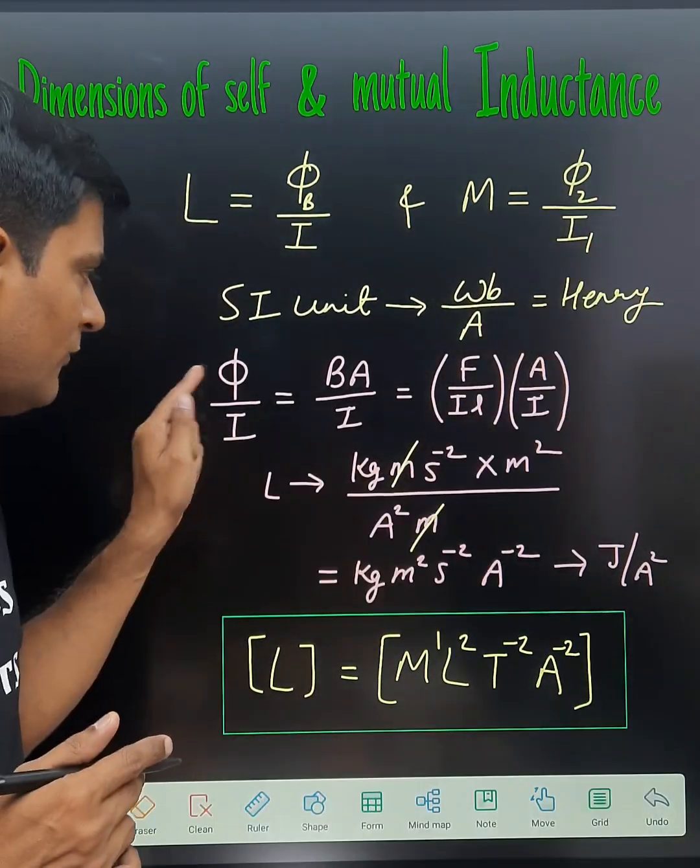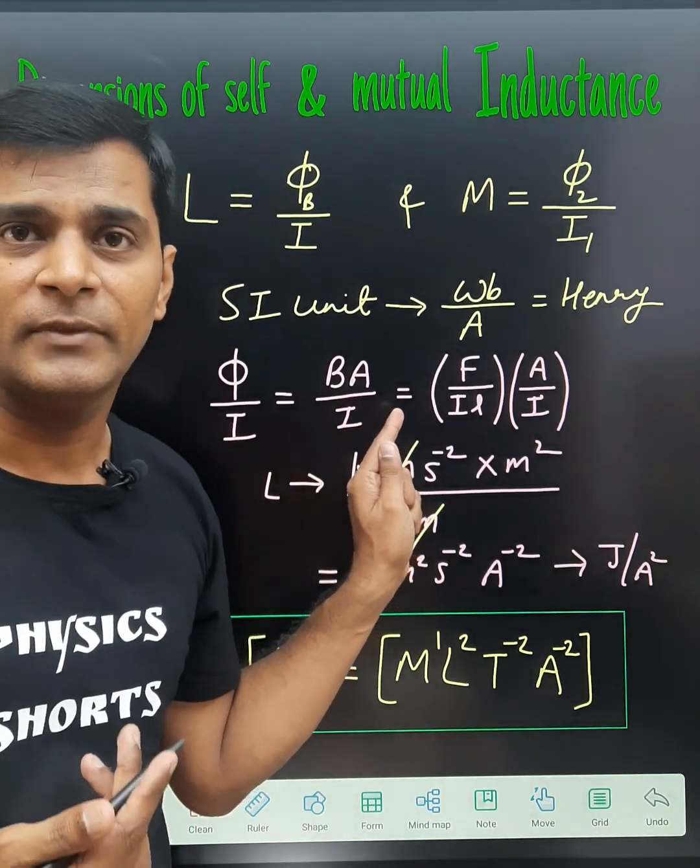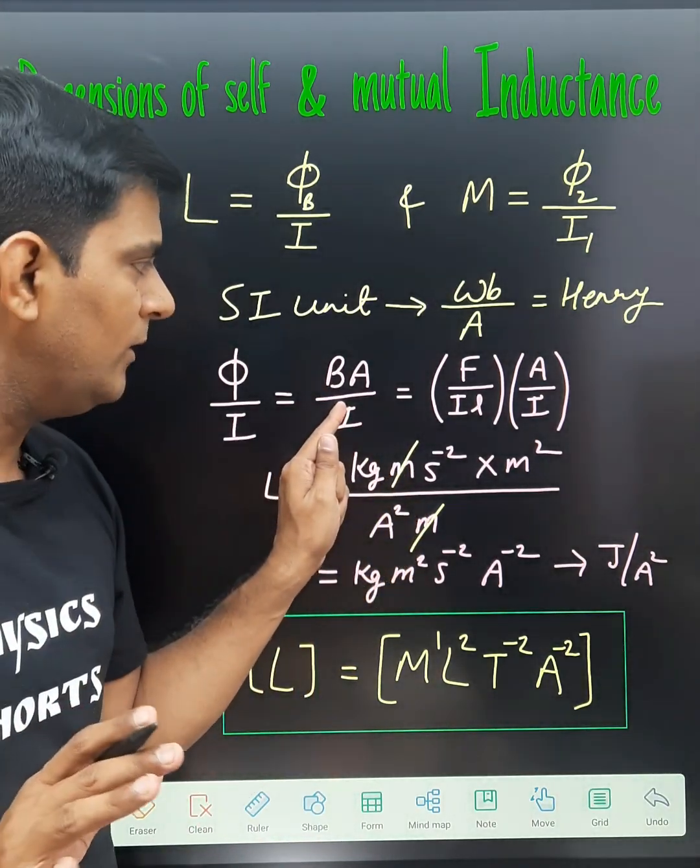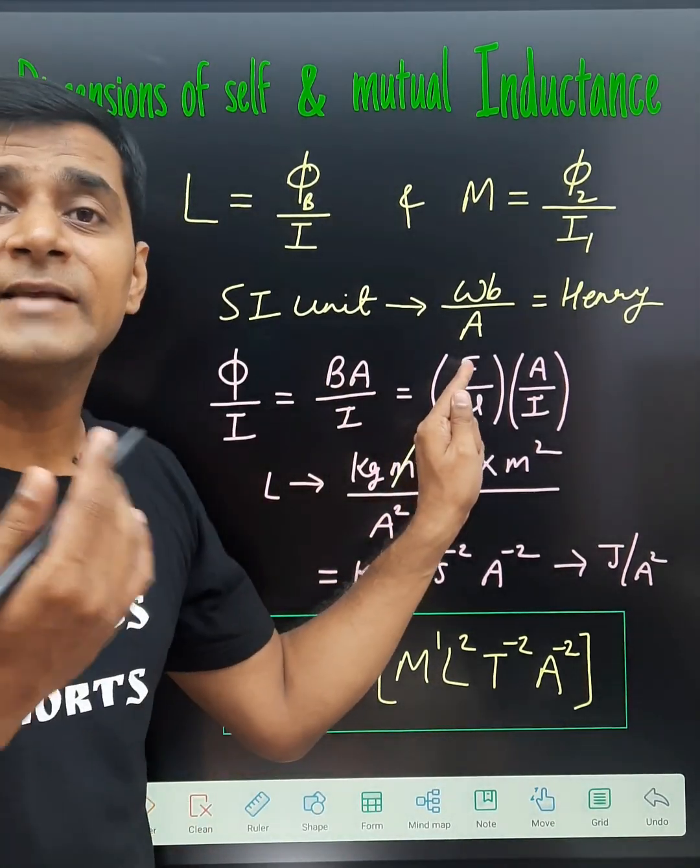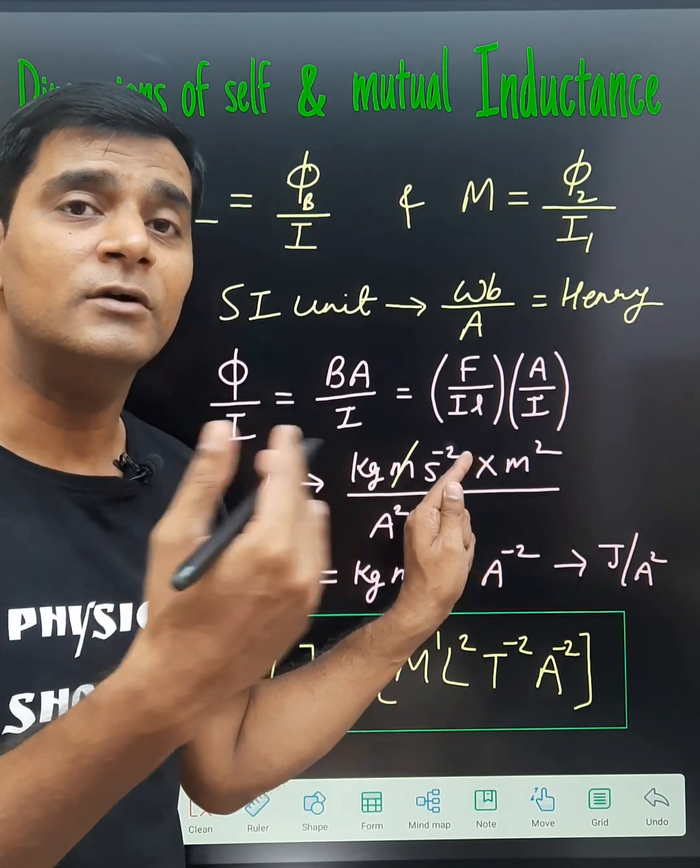φB is the magnetic flux, which is B·A (cos θ is not having the unit, so we are taking only B·A). Similarly, B is F/(IL) from the force acting on a current-carrying conductor F = BIL sin θ. We are taking this B = F/(IL).